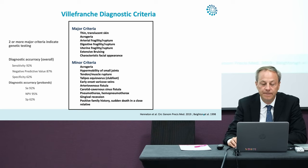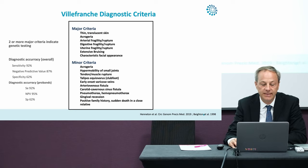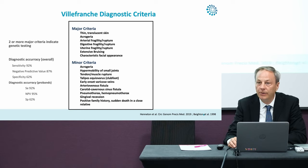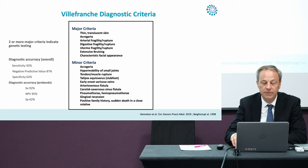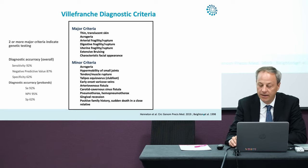Historically, the most recent criteria proposed were the Villefranche diagnostic criteria, designed at a time when the genetic diagnosis of vascular EDS was complicated and it was necessary to select patients accurately for genetic testing. Two or more major criteria of vascular EDS would be necessary to indicate genetic testing, while minor criteria would orient the physician towards the disease but would have no specific diagnostic value. The overall diagnostic accuracy of Villefranche criteria is good in specialized practice, with good sensitivity and a good negative predictive value. However, the specificity of the criteria is limited.